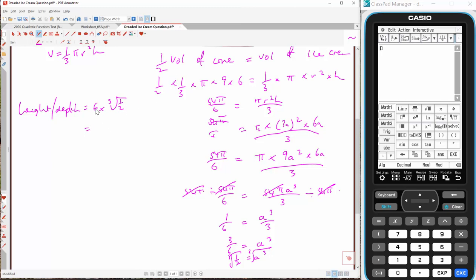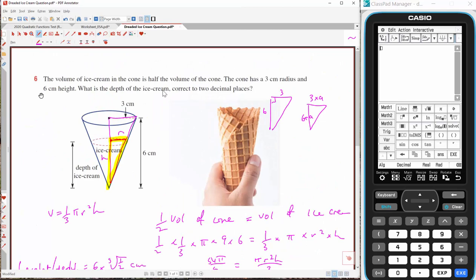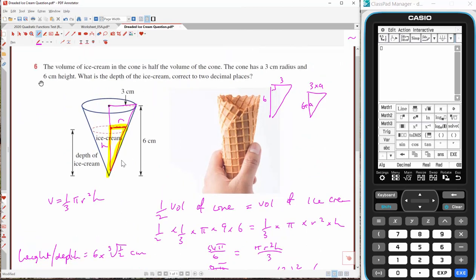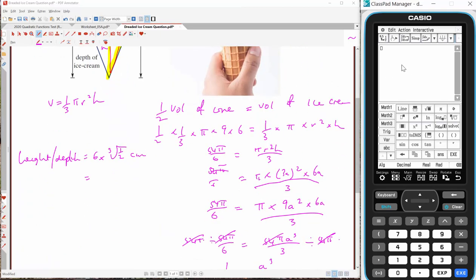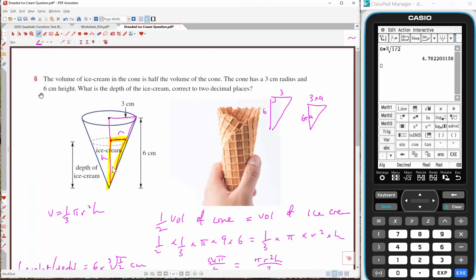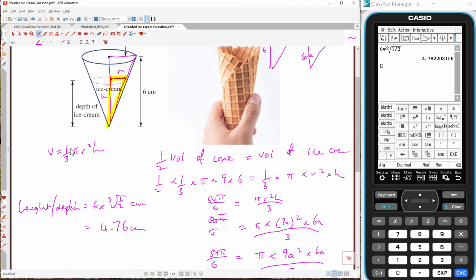Now, we're allowed to approximate that. So that's the exact answer in centimetres. If they wanted the exact answer, that's the exact answer. But they're letting us approximate it because we want to see what that actually would represent. It's going to be a number more than 3. What is the depth correct to two decimal places? Let's whack that into a calculator. 6 multiplied by math 1 has the third root template, or you can raise it to the power of 1/3. It'll give you the same answer. So it's 4.76 centimetres. So that height there is 4.76, and that will get half the volume. With that height, you'll get half the volume of the cone itself.